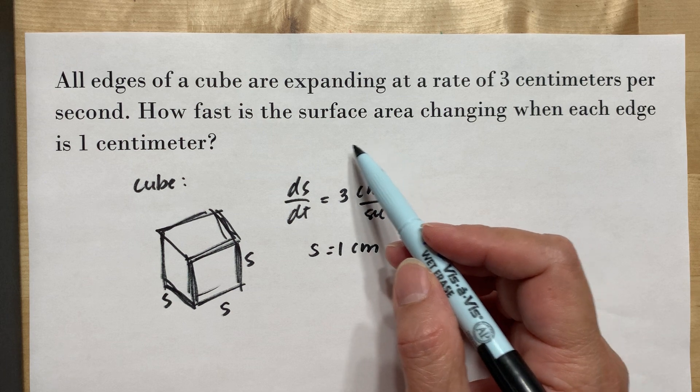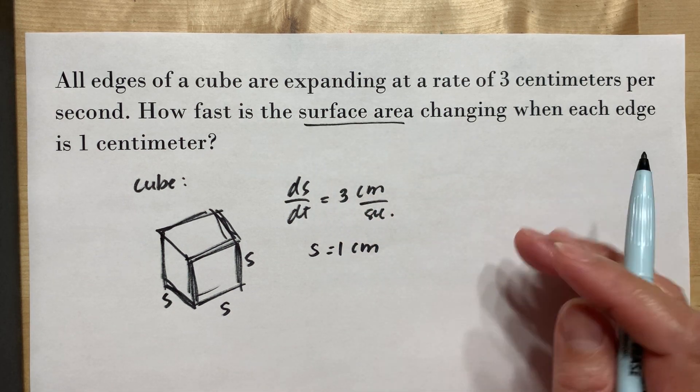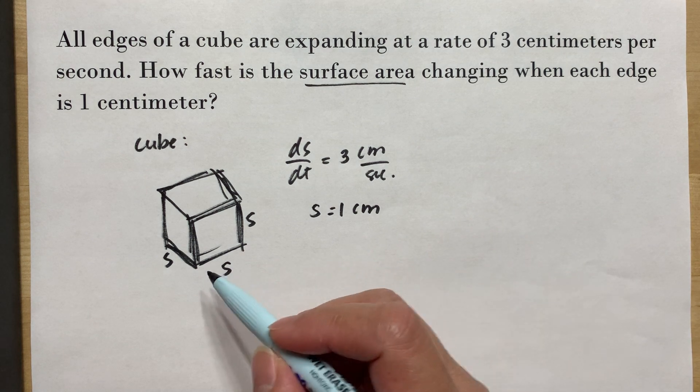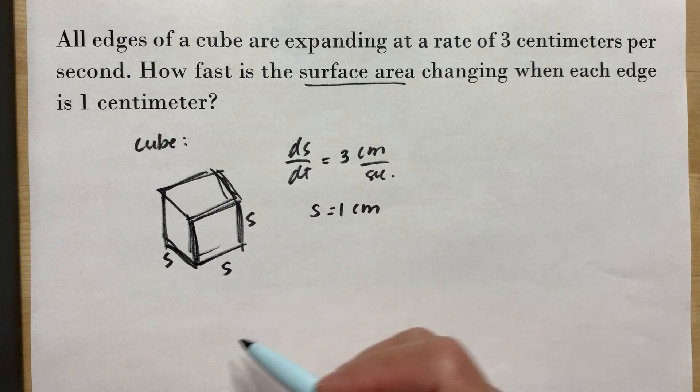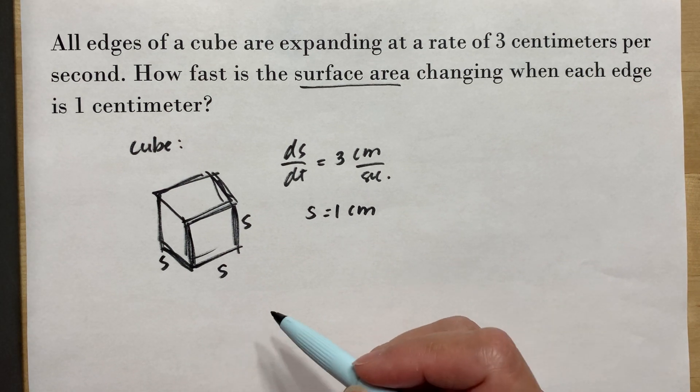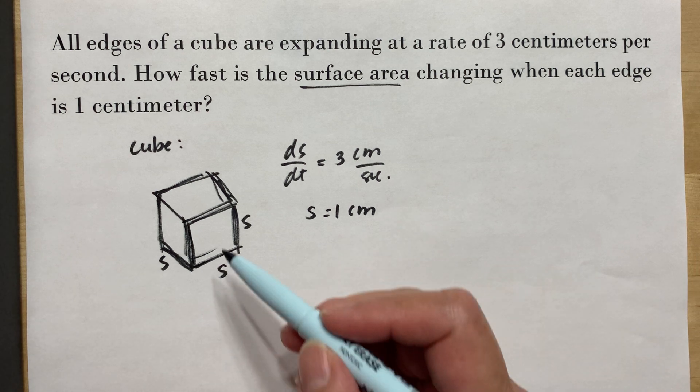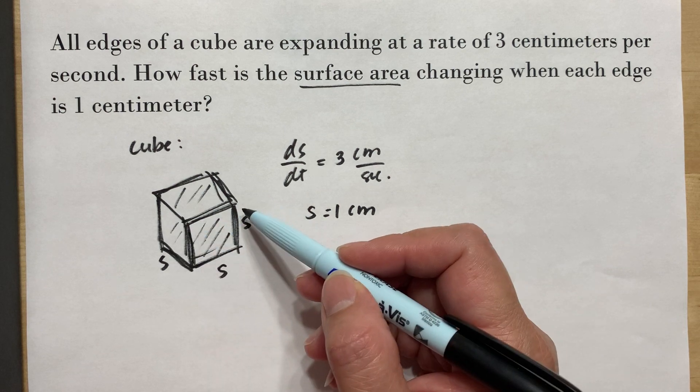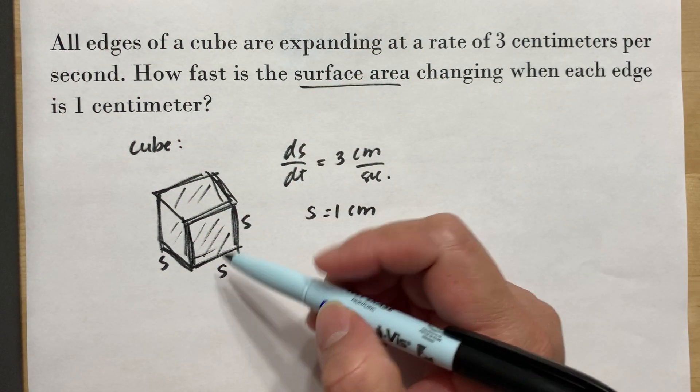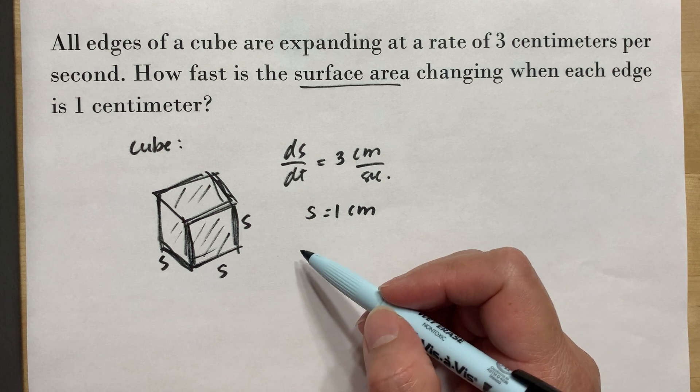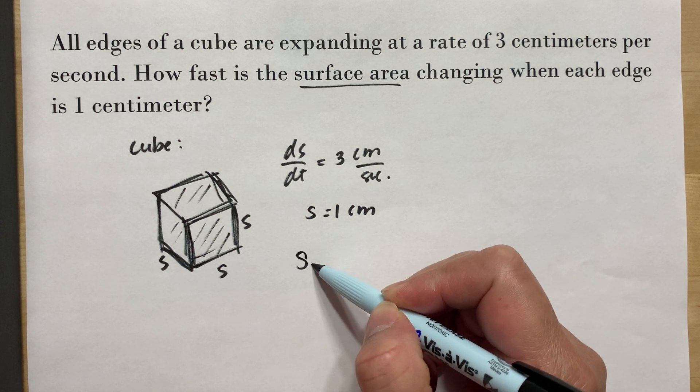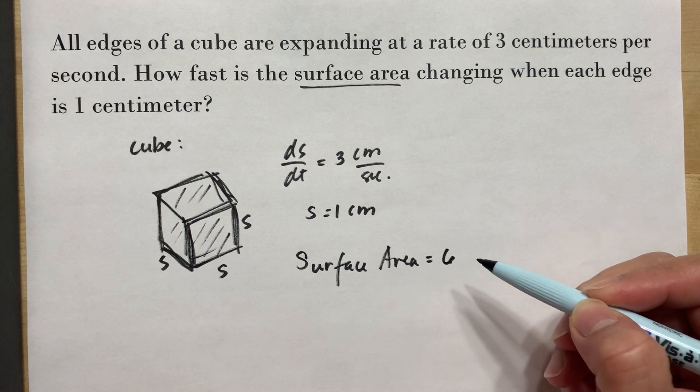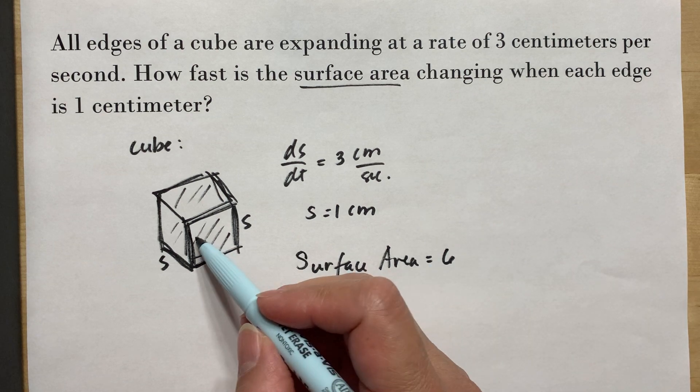Now, we're looking for the change of rate of the surface area. For surface area we need to consider all the sides, all the faces of a cube. This is the first face. We have the top, we have the side, the left side, the back, and at the bottom. Meaning the cube has 6 faces.